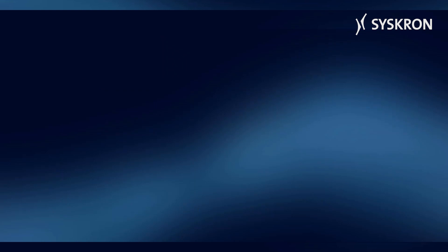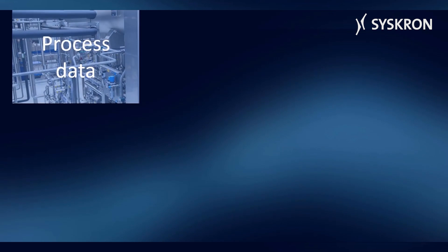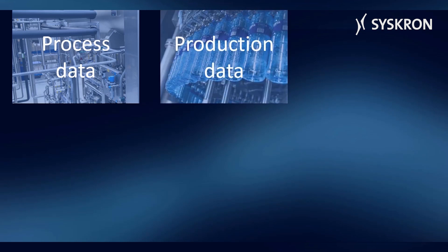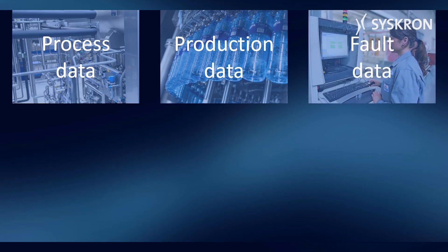The following data is available in Line Diagnostics: process data, such as status information, temperatures, quality, and speed; production data, such as orders, hours of operation, or downtimes; and fault data, such as error messages and alerts.